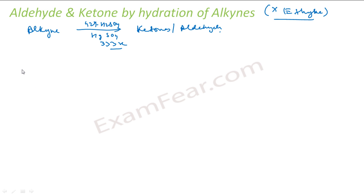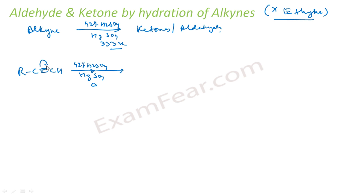Let's see the reaction mechanism. For example, I have RC≡CH as my alkyne. With 42% H₂SO₄ and HgSO₄, the H⁺ will attack the triple bond to form a carbocation. The bond breaks to form a stable carbocation as per Markovnikov's rule, giving RC⁺=CH₂. This is a stable carbocation.